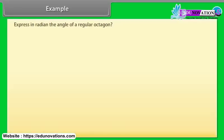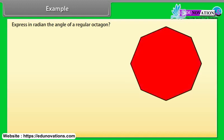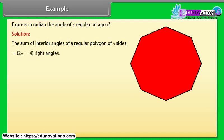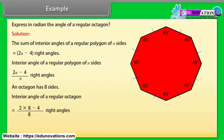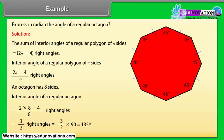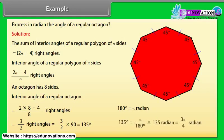Example: Express in radians the angle of a regular octagon. Solution: The sum of interior angles of a regular polygon of n sides is (2n − 4) right angles. The interior angle of a regular polygon of n sides is (2n − 4)/n right angles. An octagon has 8 sides, so the interior angle = (2×8 − 4)/8 = 3/2 right angles = 3/2 × 90° = 135°. Since 180° = π radians, 135° = (π/180) × 135 = 3π/4 radians.